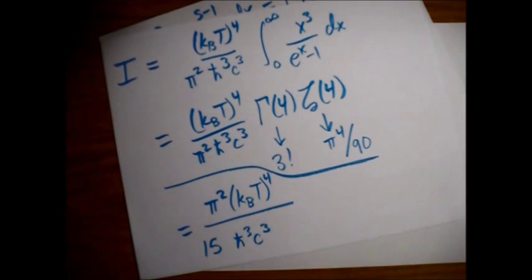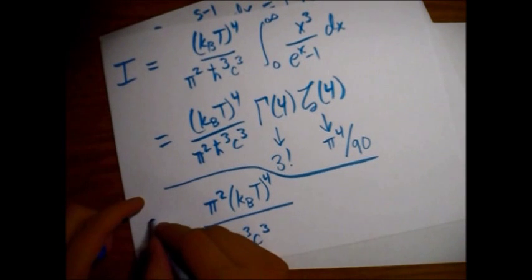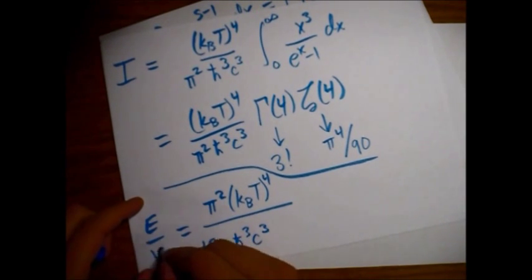Grab my book real quick. Pi squared, right? kBT to the fourth power, 15 h bar cubed, c cubed, right? And then, yes, I was the energy density, which is E divided by V. So there we go. We've just derived the Stefan Boltzmann formula for the total energy density in blackbody radiation.